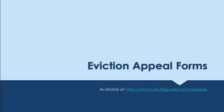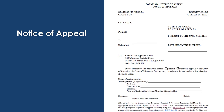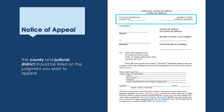We will now look at each form individually. It would be helpful if you have a copy of the judgment you are appealing and copies of the forms to look at as we review each one. The Notice of Appeal is a short form that tells the court you want to appeal a case. At the top left, fill in the county where your case was decided. At the top right, add the judicial district.